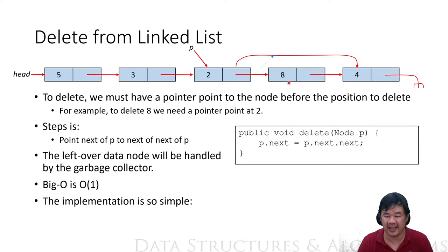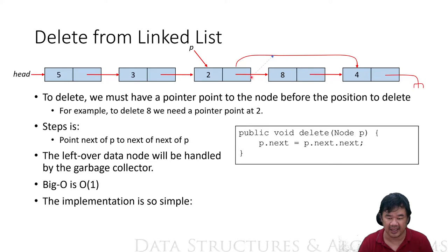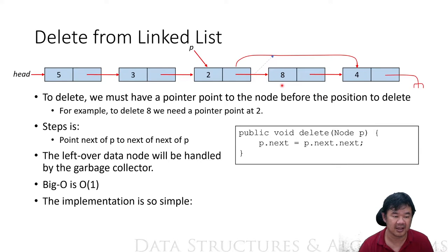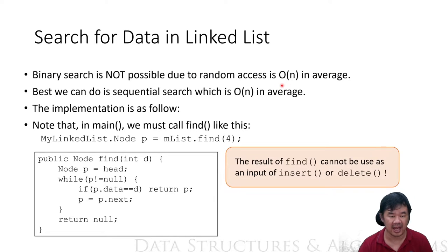You can delete this data element only if you have a pointer pointing to the node before it. Then you set p.next to p.next.next, so that arrow now points past the deleted node. The deleted node becomes garbage and you can throw it away. This is also O(1).